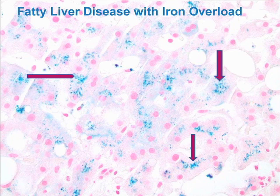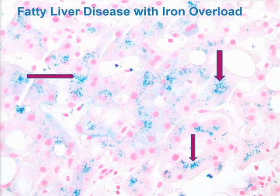Here we see an individual with fatty liver disease, quite common in the metabolic syndrome that we're seeing almost as an epidemic here in North America. You can see the iron stain for Pearl's Prussian blue showing granules of haemosiderin in an individual diagnosed with fatty liver disease. Does this individual have significant iron overload? Quite commonly these individuals with fatty liver disease have presented with enormously elevated serum ferritin that has led the clinician to suspect a form of hereditary haemochromatosis.